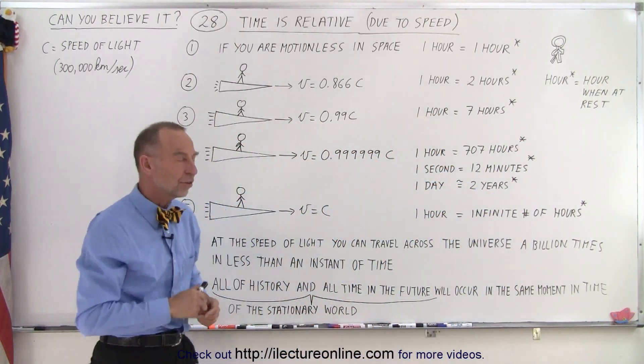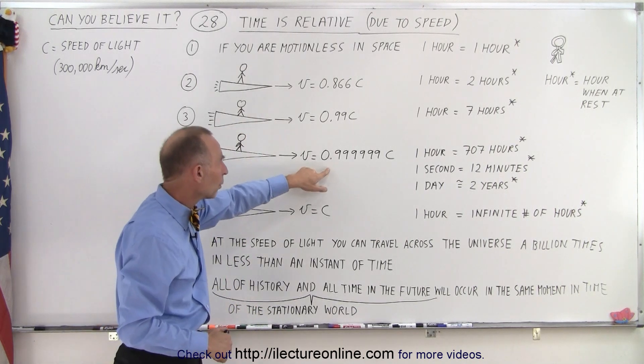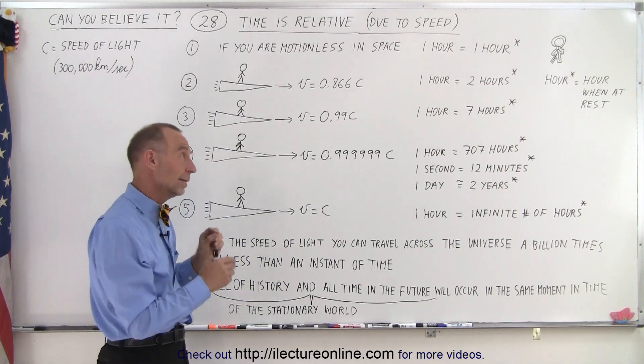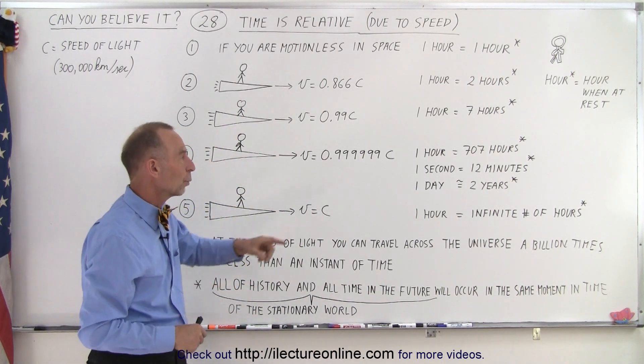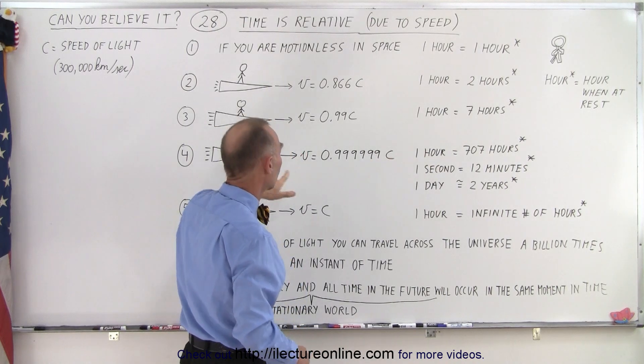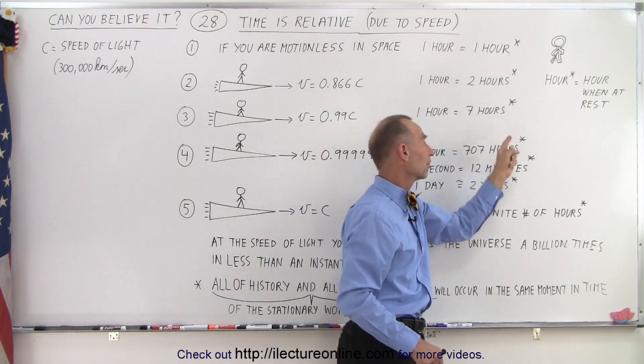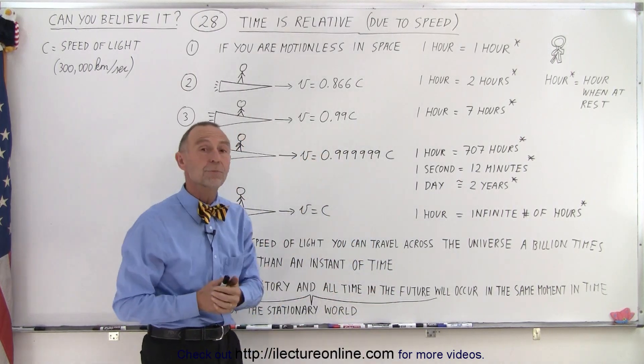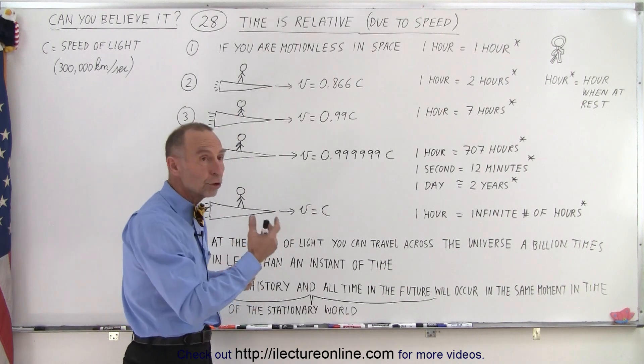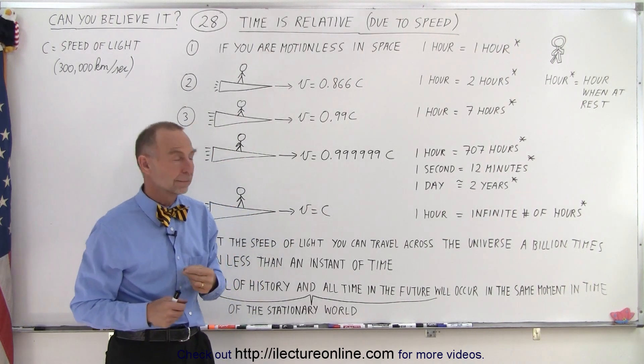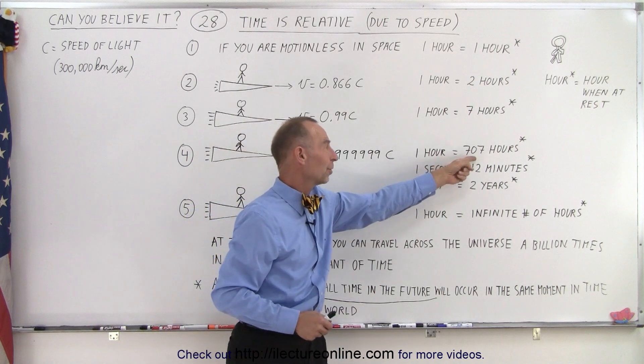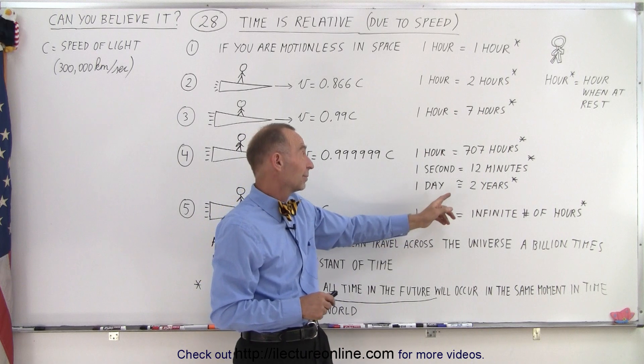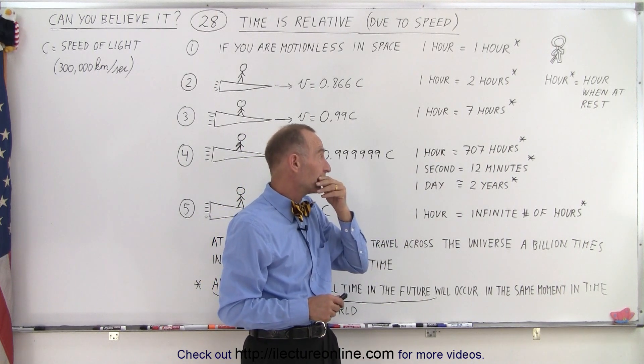But what if we increase the speed even more? What if we increase the speed to 0.999999C? That's really close to the speed of light, not quite the speed of light. Well, then one hour experienced by this person would be 707 hours experienced by the person in space. For example, let's say that they had a means of communicating and this person says, I will call you in an hour. Well, one hour later, this person would have experienced 707 hours. Well, 707 hours, how many days is that?